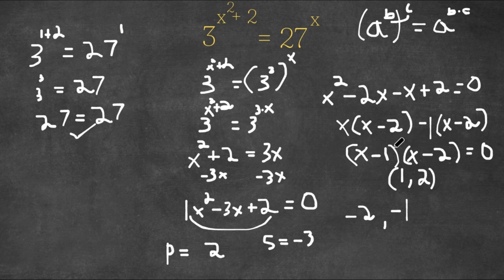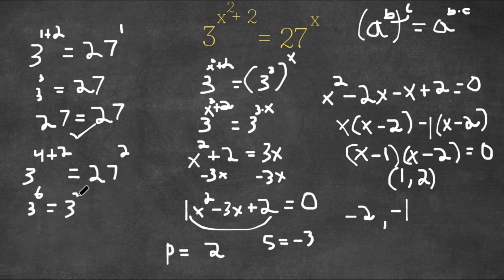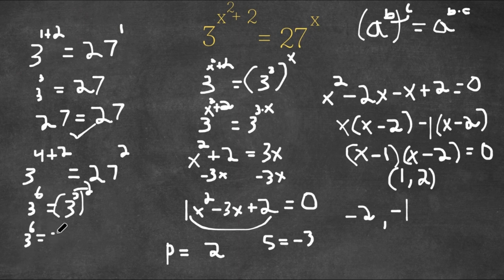So we have 27 equals 27 — this confirms x equals 1 is correct. Now let's test x equals 2: 3 to the power of 2 squared plus 2, which is 4 plus 2, equals 27 to the power of 2. This gives 3 to the power of 6 equals — we can change 27 to 3 to the power of 3, and 3 to the power of 2 times 3 is 6, so 3 to the power of 6 equals 3 to the power of 6. So x equals 2 is correct as well.